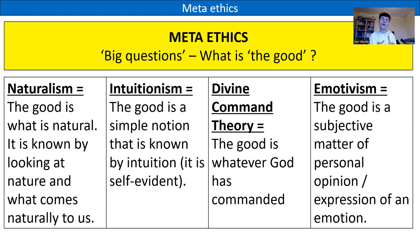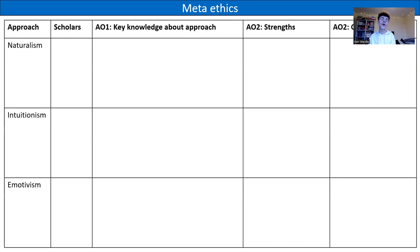For each of these approaches, we are going to look at your AO1 knowledge — the scholars and what they've said — and do our AO2 evaluation, looking at strengths and weaknesses of naturalism, intuitionism and emotivism. I'd love to hear what you think in the comments about which of these theories gives the best answer to the meta-ethical question. If you've downloaded the PowerPoint, you might like to print this slide and fill in key AO1 knowledge and AO2 strengths and weaknesses as we go through.